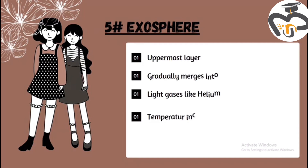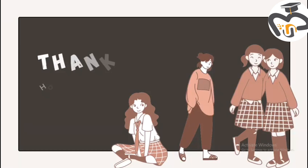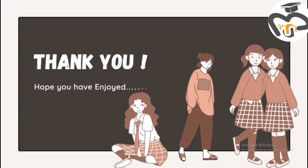Number five: the exosphere. It's the uppermost layer and it gradually merges into outer space. Light gases like helium and hydrogen are found here, and the temperature increases with height. The exosphere is mostly like outer space — it's just the outer space. Thank you! Hope you have enjoyed my presentation.